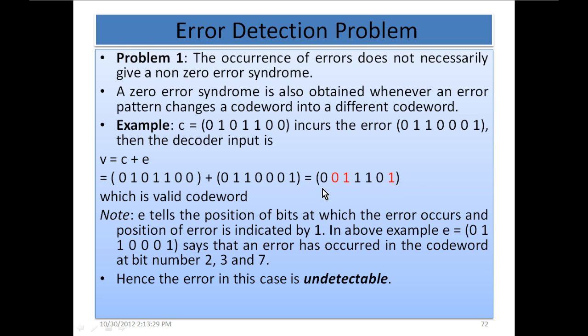The problem is that 0, 0, 1, 1, 1, 0, 1 is a valid codeword. If we go through the list of valid codes, we will know that this has been transformed into a valid codeword of Hamming code. So when we decode this, we will get error syndrome 0 — no error will be detected in the syndrome.